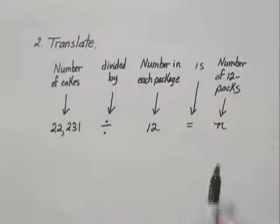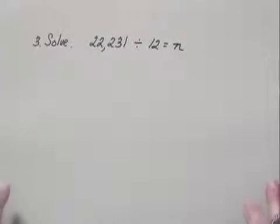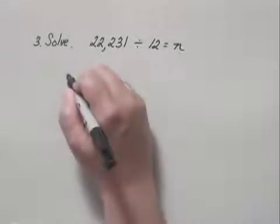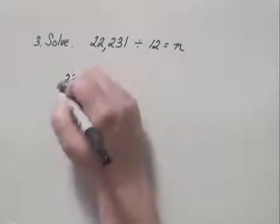So we have an equation that we can solve. That's step three of the process. To solve this equation, we need to carry out the division. We divide 22,231 by 12.